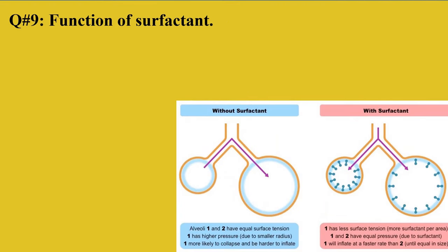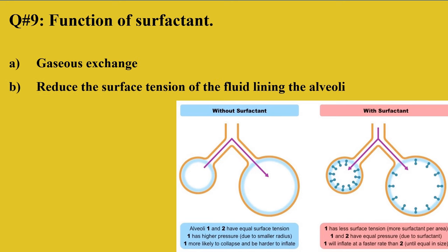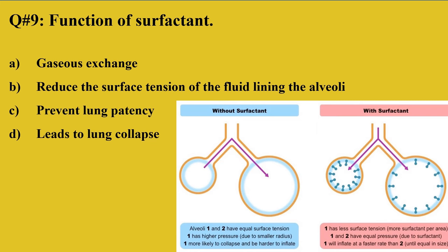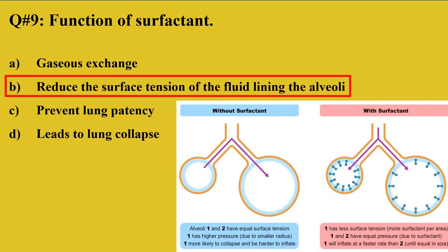Question 9: What is the function of surfactant? A: Gaseous exchange, B: Reduce the surface tension of the fluid lining the alveoli, C: Prevent lung patency, D: Lead to lung collapse. The right option is B. Surfactant reduces the surface tension of fluid lining the alveoli. Without surfactant, the lungs are more likely to collapse and harder to inflate. With surfactant, pressure is equalized and lungs inflate at a faster rate.